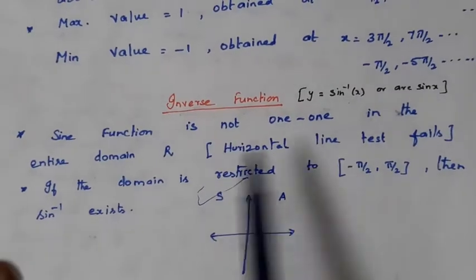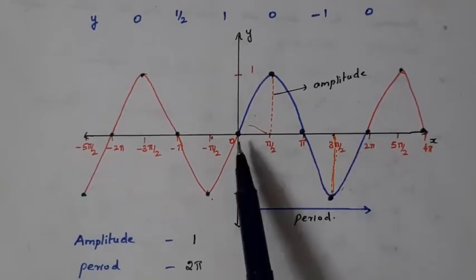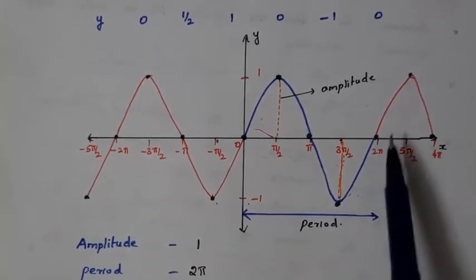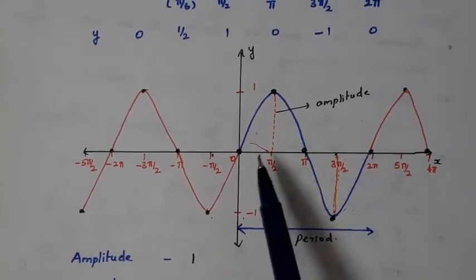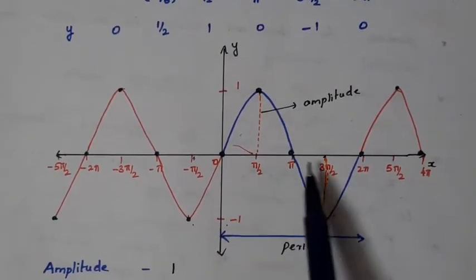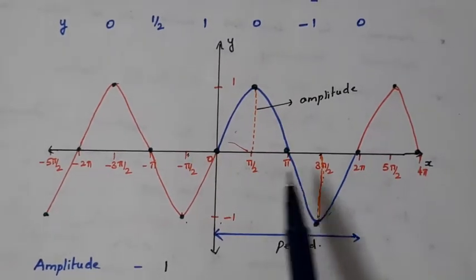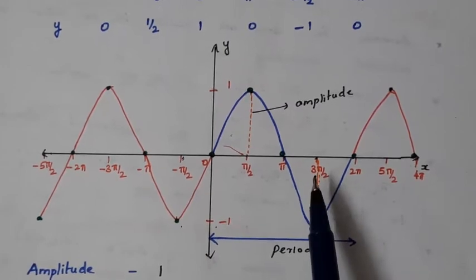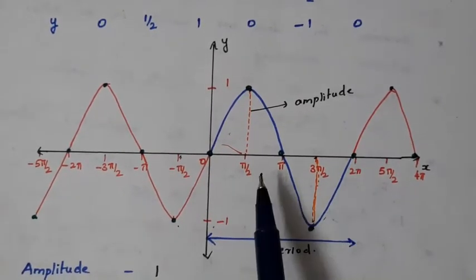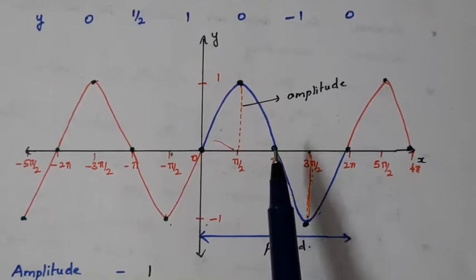The sine function is not one-to-one in the entire domain, because after one complete rotation from 0 to 2π, for different values you get different outputs — it is one-to-one. But after 2π, for the second revolution, the same values get repeated. So the sine function is not one-to-one in the entire domain; for many values of x, it gives the same y value. Therefore we cannot say the sine function is one-to-one overall.